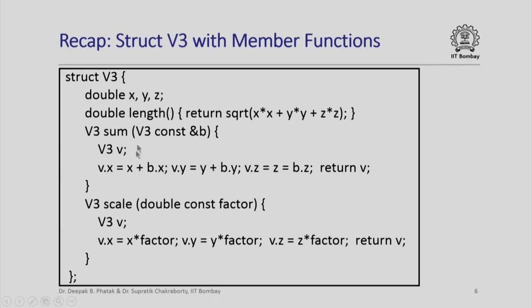From the previous lecture, our three-dimensional vector V3 structure had three member data fields x, y, and z, each of type double. It had three member functions: length, sum, and scale — for computing the Euclidean length of the vector, for computing the vector sum of a given vector with another vector, and for scaling a given vector by a constant scalar factor. We studied these member functions in the previous lecture.